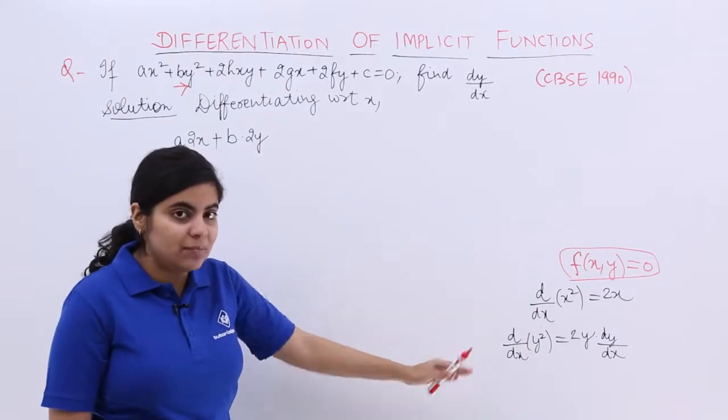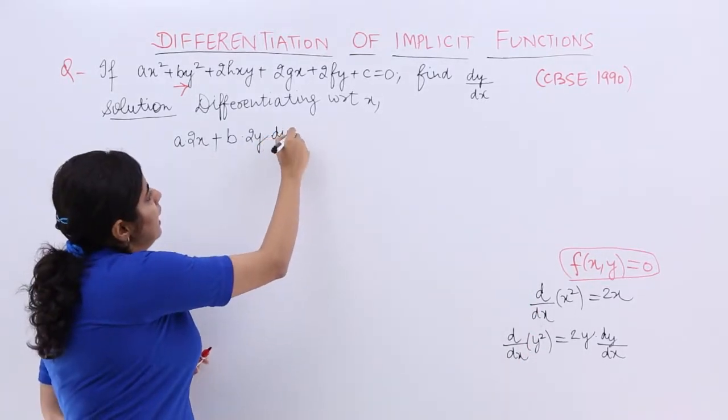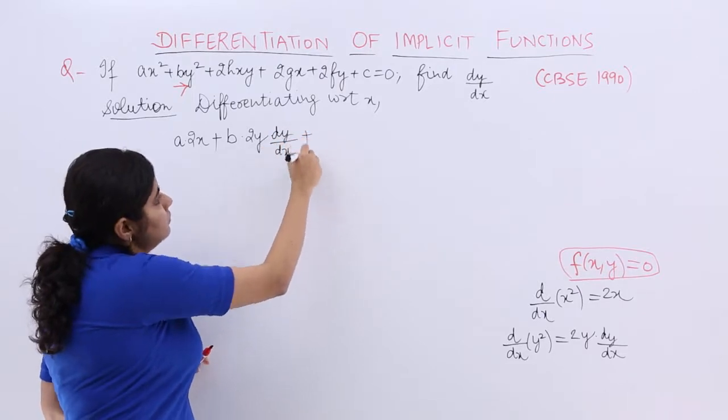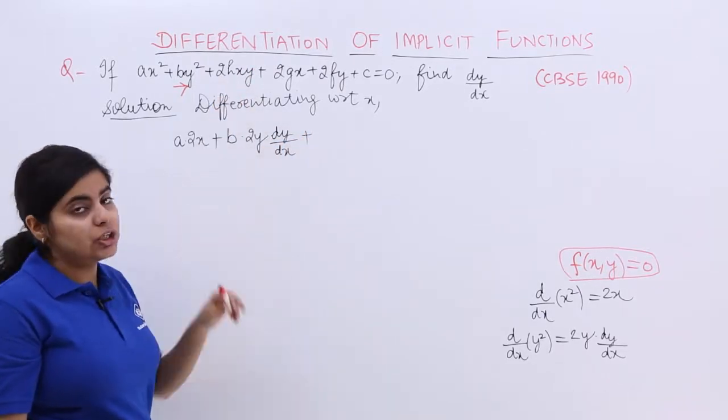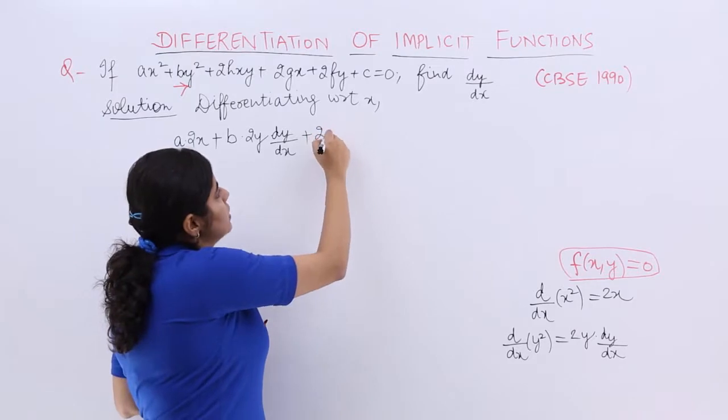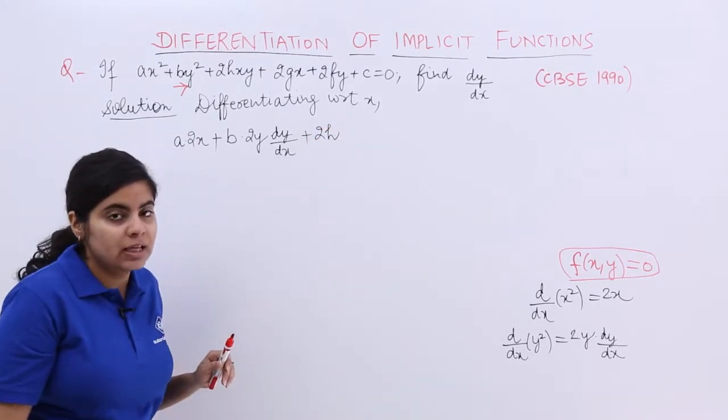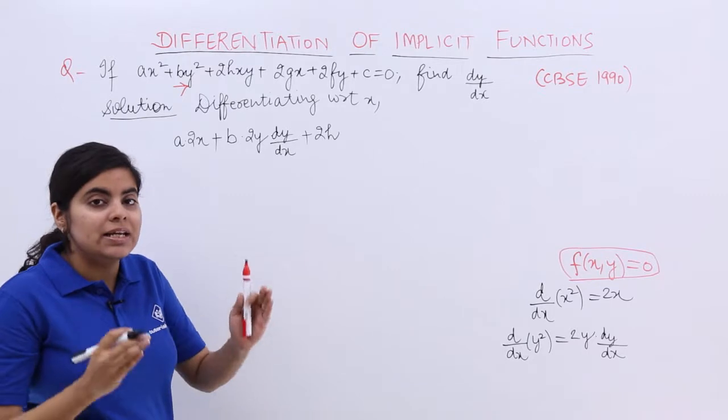That has to be taken care. Because of that same thing, let me apply this here. So it becomes multiply by dy/dx. Next term is 2hxy. 2hxy has 2h as a constant. Then, you have x and y both.